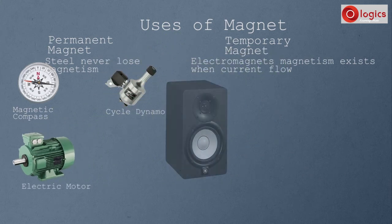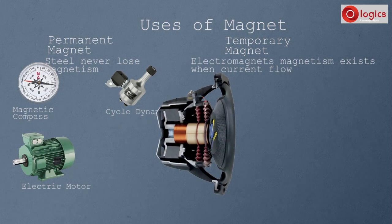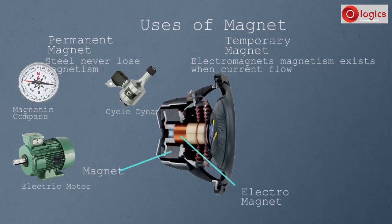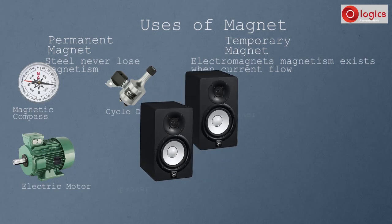Another use of magnets is in audio speakers. This is an audio speaker. If you remove this cover, you can find a magnet. Here, this is a permanent magnet. You can also find an electromagnet — this wire wound as a coil acts as an electromagnet. When electric current passes through the coil, it becomes a temporary magnet. Due to the interaction of both the permanent magnet and the temporary magnet, we can hear sound from the speakers. So here, both permanent and temporary magnets are used.